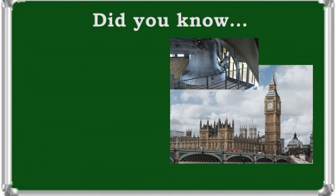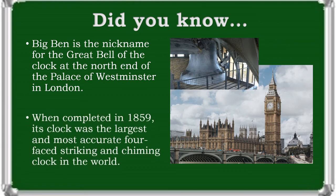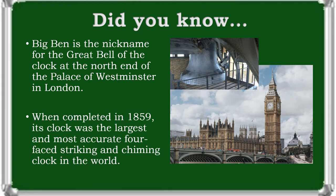Big Ben is the nickname for the Great Bell of the Clock at the north end of the Palace of Westminster in London. When completed in 1859, its clock was the largest and most accurate four-faced striking and chiming clock in the world.